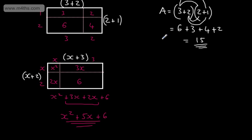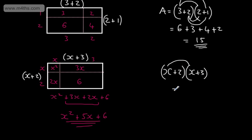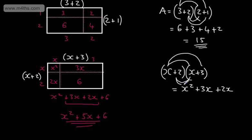Alternatively, using FOIL for (x+2)(x+3): x times x = x squared; x times 3 = plus 3x (if it were minus 3 it would be minus 3x); 2 times x = plus 2x; 2 times 3 = plus 6. That gives exactly the same result: x squared plus 5x plus 6.